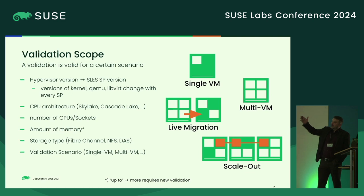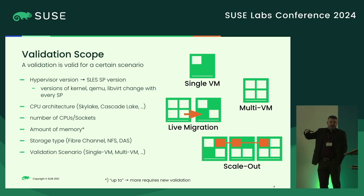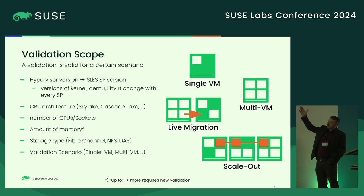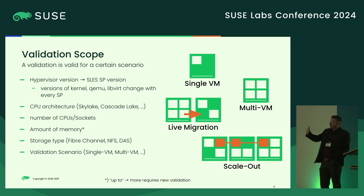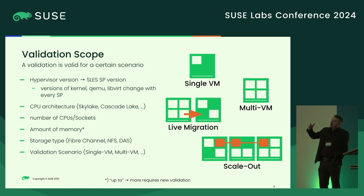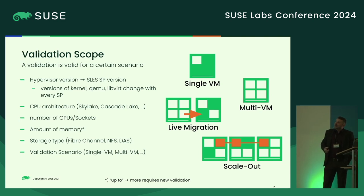What I mean is: if we validate SLES 15 SP4 and the associated hypervisor for single VM on a Cascade Lake CPU with three terabytes of RAM, then it's exactly that. The customer can use it and get support for that and not for anything else. So it's quite a lot of effort to keep up with the progress.